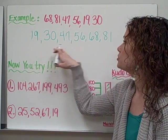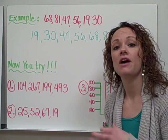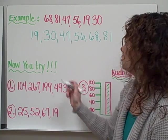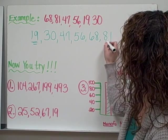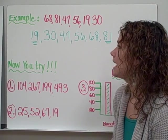All right, so now that my numbers are in order from least to greatest, I need to find the smallest number and the greatest number. So my smallest number is 19, and my greatest number is 81.